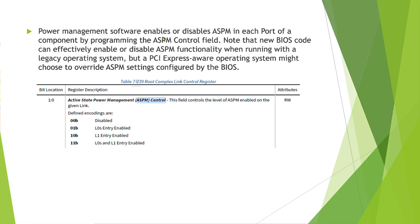Power management control: these are the Active State Power Management control fields, which can be configured by software when the device supports the ASPM fields. If configured as 01, it will only support L0s. If configured as 10, it will only support L1 entry. This is a read-write register in the root complex control register. You have to configure it before entering the L1 or L0s state.